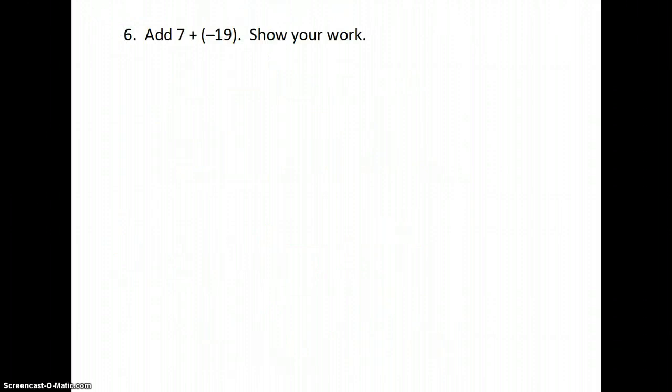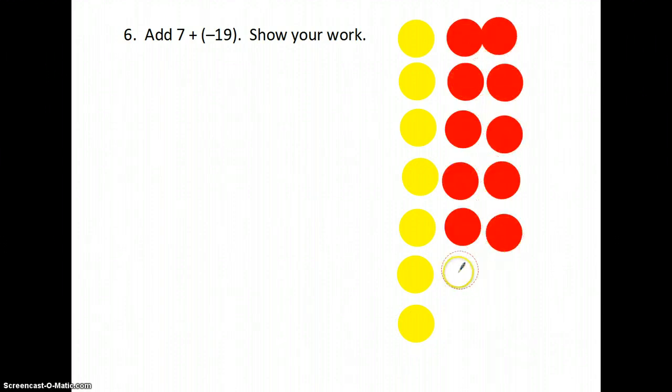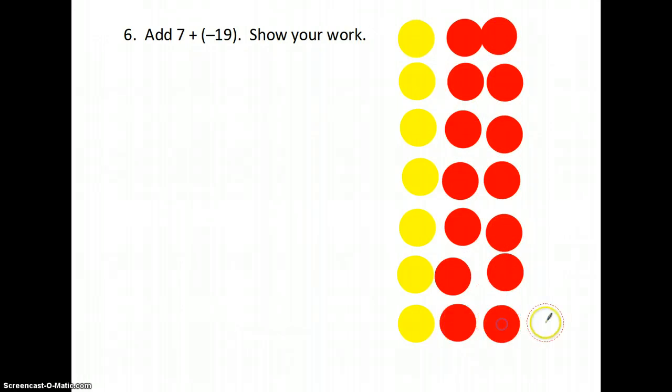Next problem, add 7 + (-19) and show your work. Showing your work can be hard with addition, but there's several ways that we learned how to do it. The first way that I'm going to demonstrate is with the chips. So I have 7 positive chips, and I have 19 negative chips.